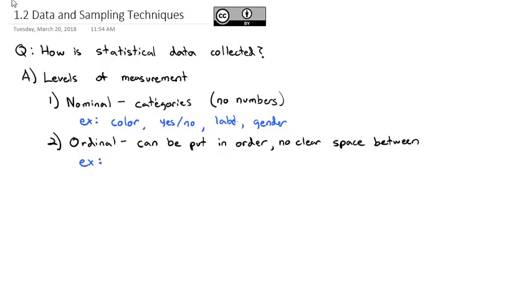An example of ordinal data might be finishing place in a race. There's a clear first, second, and third, but the space between first, second, and third is not necessarily well defined. That's ordinal. Or we might say the top five cooks in America, cook one, two, three, four, and five. That's ordinal. We can put them in order, but we don't necessarily know how much better each one is than the other.